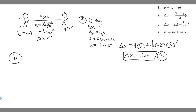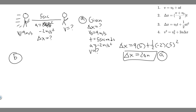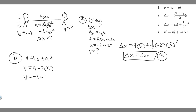Now for part B, we're trying to find the final velocity. All the variables are the same. This time we solve for v using the equation v = v₀ + at. We have v₀, a, and t, so: v = 9 + (−2)(5) = 9 − 10 = −1 meters per second. So her final velocity at the end of this interval is −1 meters per second. That's your answer to part B.